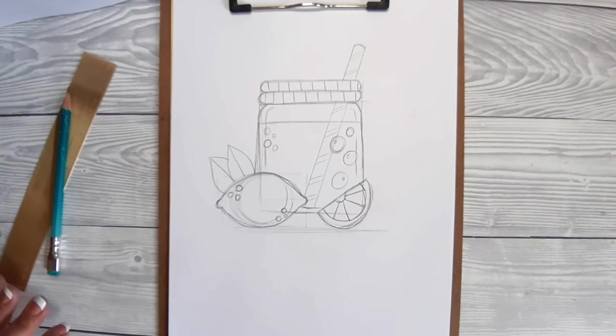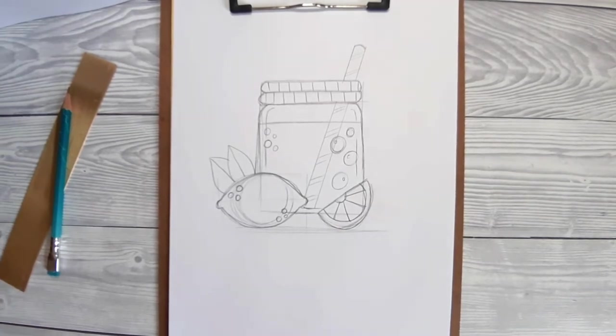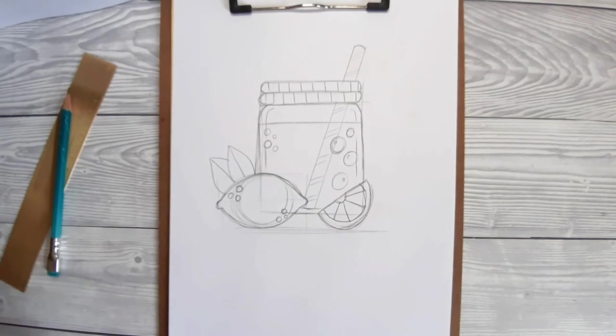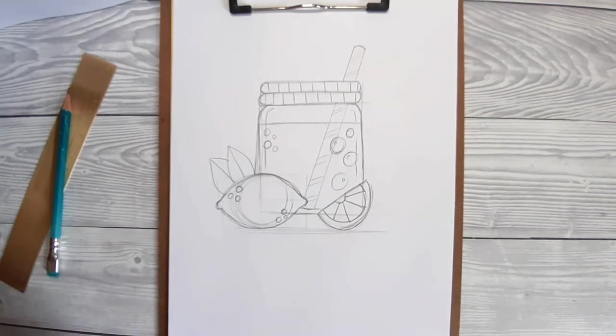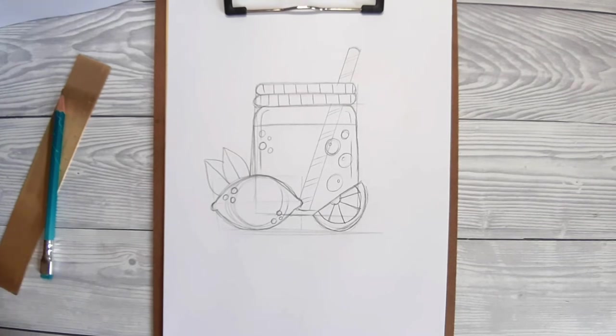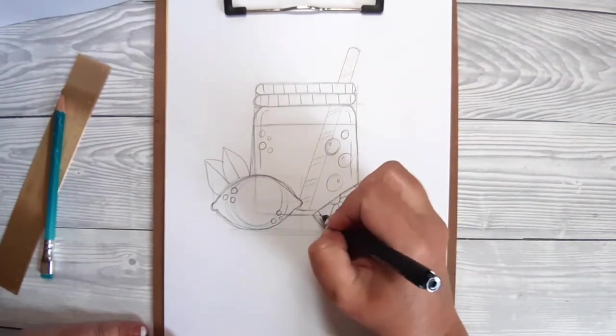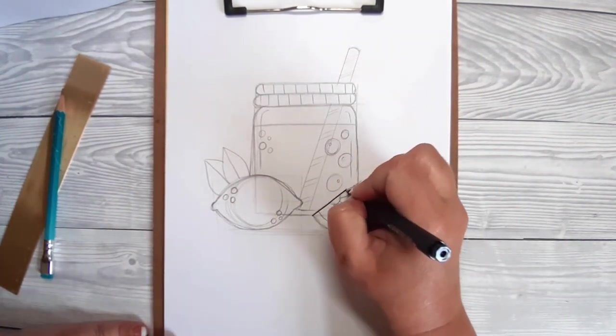So this is where we need our fine liners. What I prefer to do is use two or three different sizes, so I'm going to go in with a thick 1.0 to do the outer lines and then the details in smaller, maybe a 0.5 or 0.2, that kind of thickness.